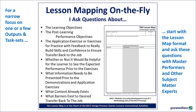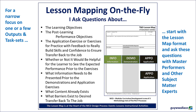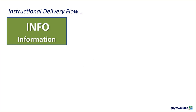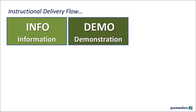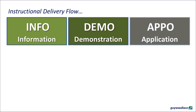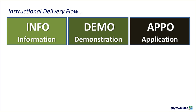For a narrow focus on one or just a few output and task sets, you can do lesson mapping on the fly by asking a series of questions. This will start the lesson map format — ask these questions with master performers and other subject matter experts, one-on-one or in a group setting. It's all about information, demonstration, and application. The instructional delivery flow is information, generally followed by demonstration, and then followed by application exercises for practice and feedback.